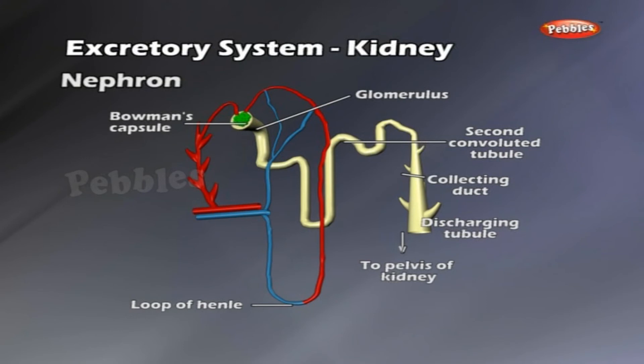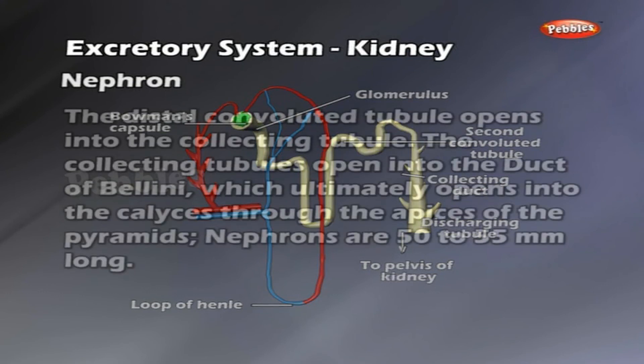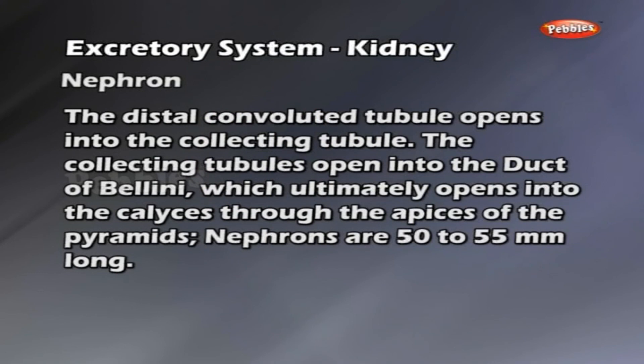The proximal convoluted tubule straightens out to form a U-shaped loop of Henle, which has a descending and ascending limb. The ascending limb gives rise to the coiled distal convoluted tubule. The distal convoluted tubule opens into the collecting tubule. The collecting tubules open into the duct of Bellini, which ultimately opens into the calices through the apices of the pyramids.